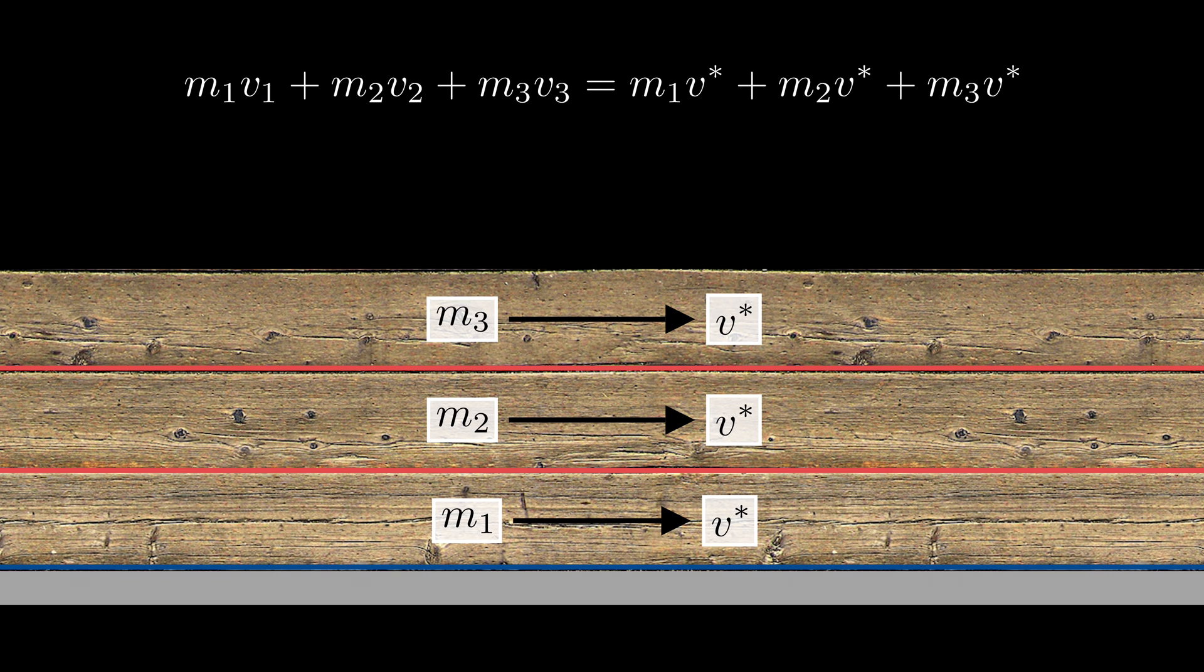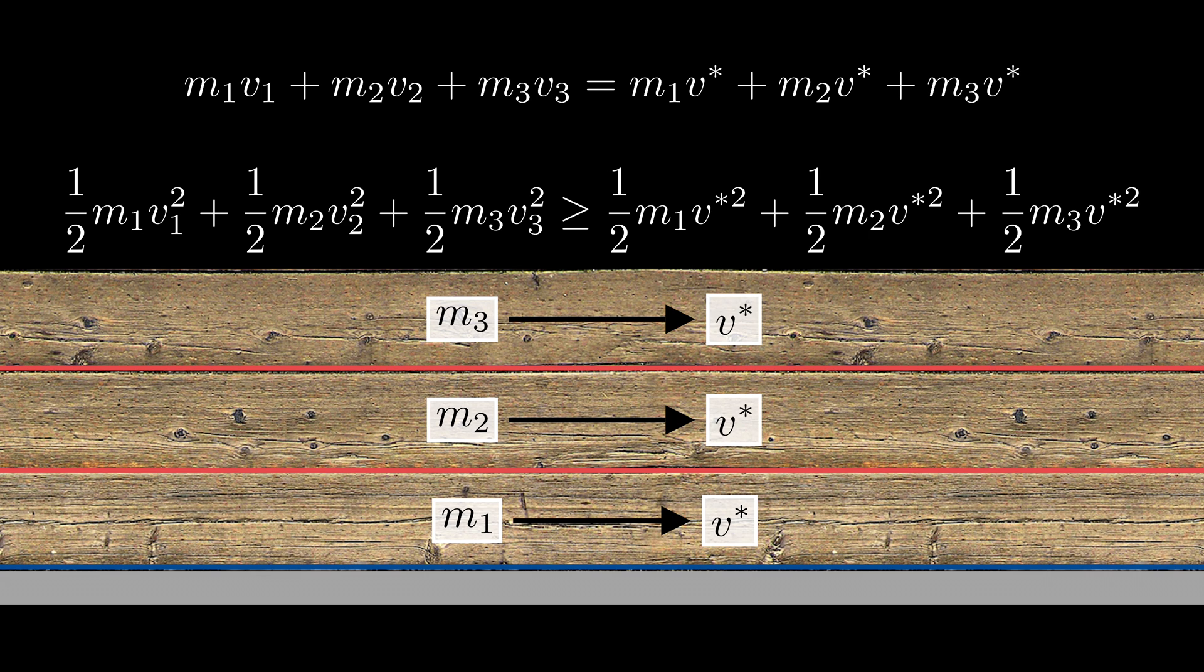The final velocity can be calculated using the conservation of momentum, while the conservation of energy says our initial kinetic energy will be larger than our final kinetic energy because of energy dissipation.